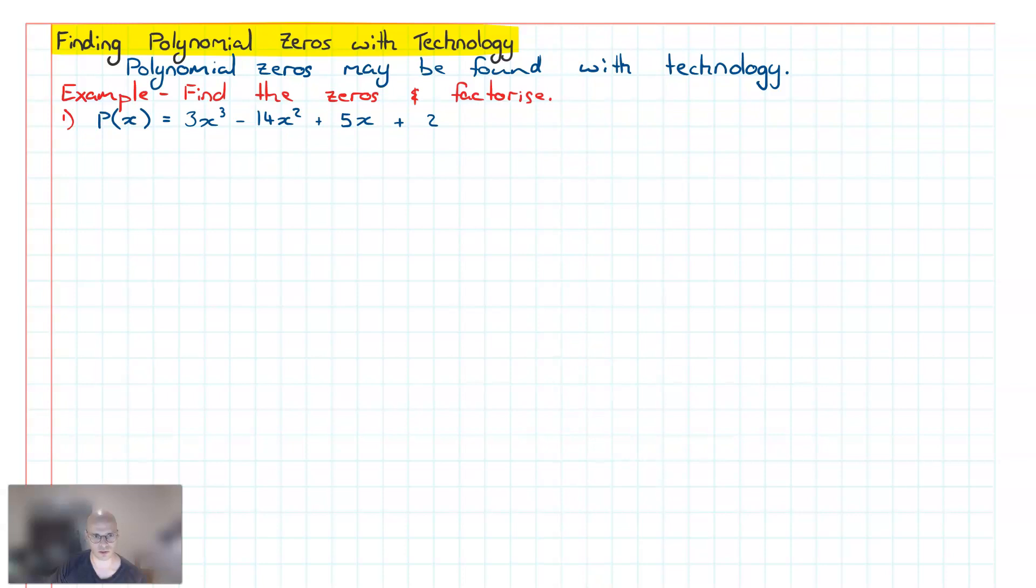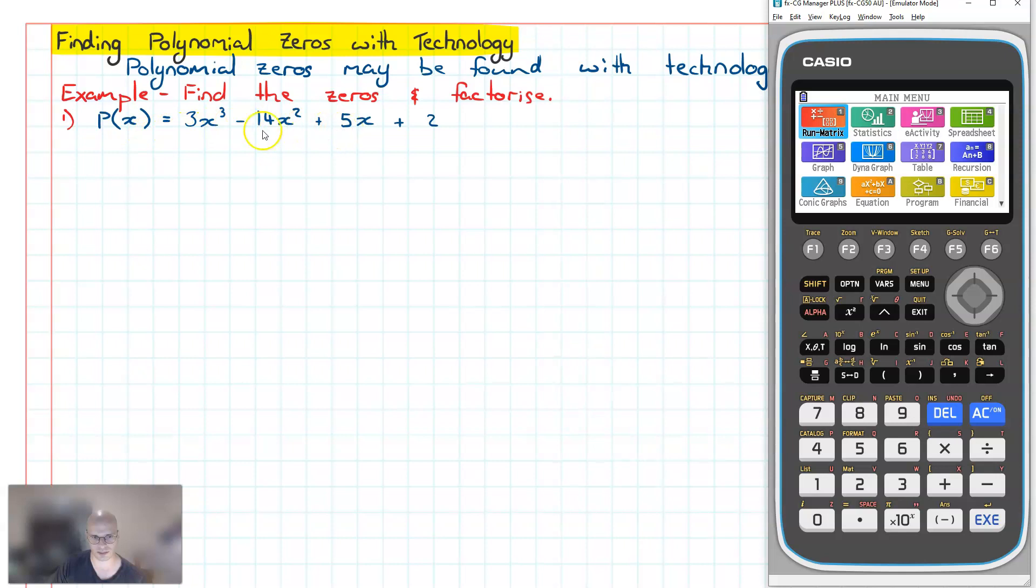Welcome to this video on the topic of polynomials and functions. In this video, we're going to have a look at how we can use technology to find these zeros and subsequently factorize polynomials. Now consider the polynomial P(x) = 3x³ - 14x² + 5x + 2. What we're going to do is use that technology to first find the zeros of this particular polynomial.